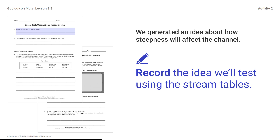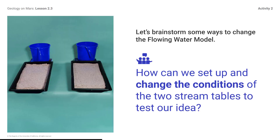We generated an idea about how steepness will affect the channel. Record the idea we will test using the stream tables. You should record or remember your idea for later reference. Let's brainstorm some ways to change the flowing water model. How can we set up and change the conditions of the two stream tables to test our idea? Remember, we want to test the idea about whether the steepness of the land affects how water flows.